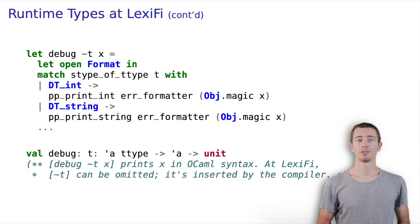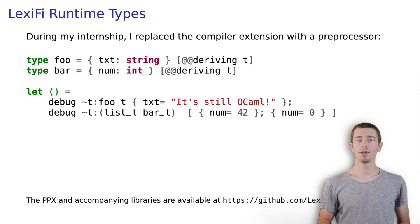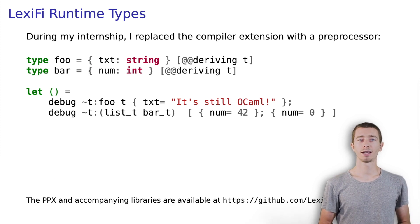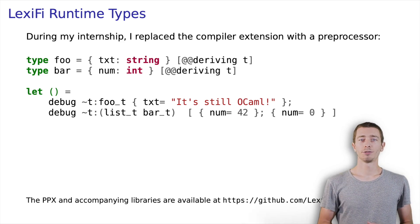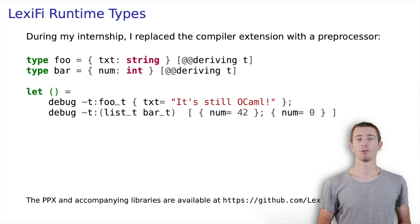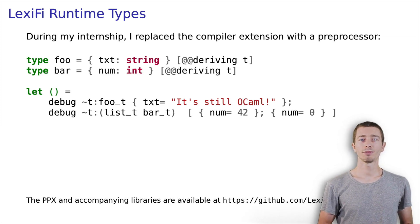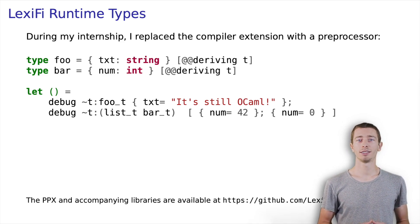The compiler extension then synthesizes a new value of type ttype, which is nothing less than a runtime representation of the value to be debugged. Knowing this, debug became much less magical to me. I was able to grasp my task: to replace LexiFi's compiler extension with a more ecosystem-compliant syntactic preprocessor. After a few weeks, I came up with what we see here. I wrote a PPX-deriver that synthesizes an equivalent runtime representation before compilation. The runtime types are inserted into the AST.